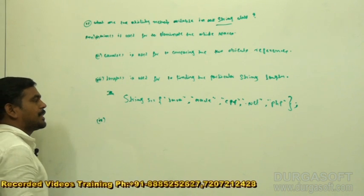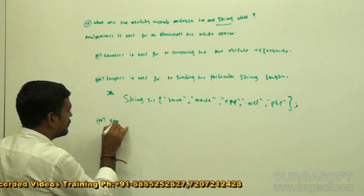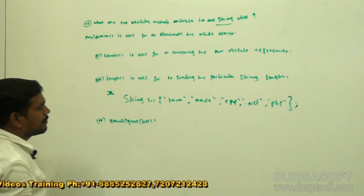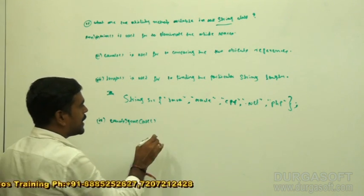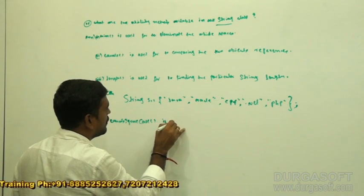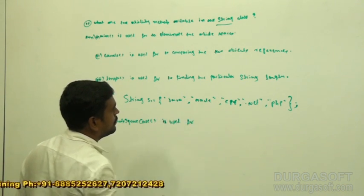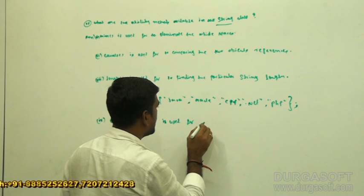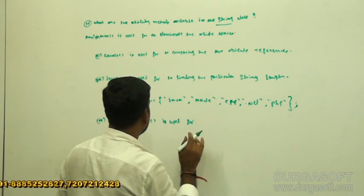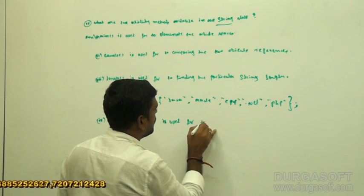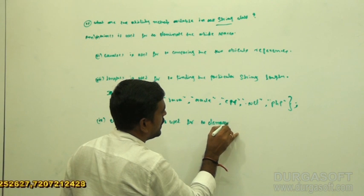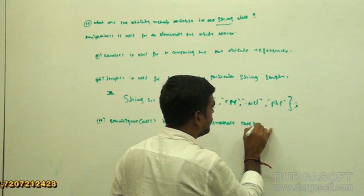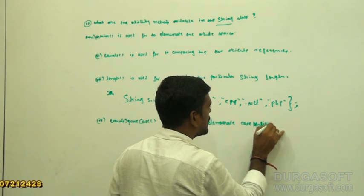Equals ignore case method. This is used for comparing two strings while eliminating case sensitive values.